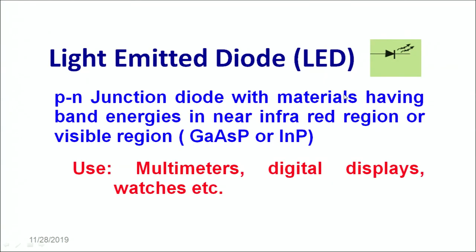Let's move on to the next kind of diode — the light emitting diode. As the name suggests, a light emitting diode gives out light when it conducts, meaning it converts electrical current into light energy and emits wavelengths in the visible region. A p-n junction diode for LEDs is made with materials having band energies near the infrared or visible region. Common materials used include gallium arsenide phosphate or indium phosphate. Some common uses of LEDs are multimeters, digital displays, and watches.